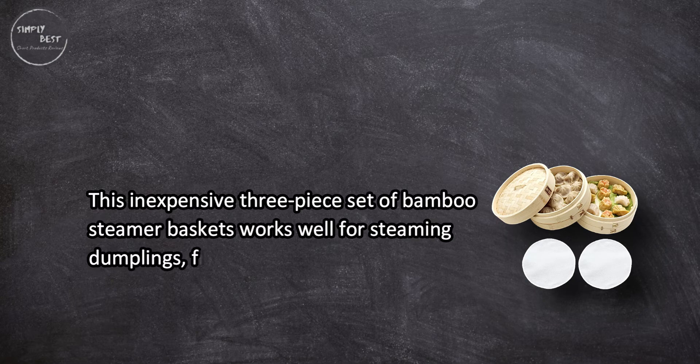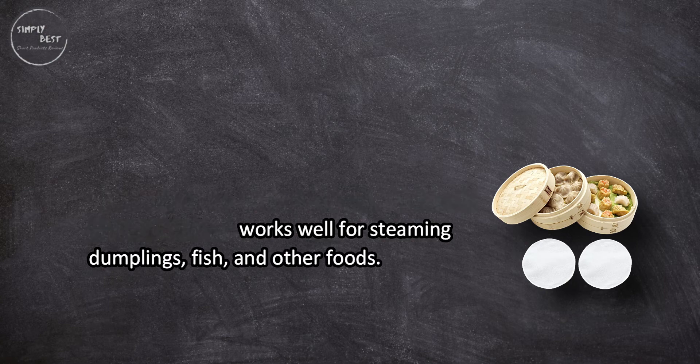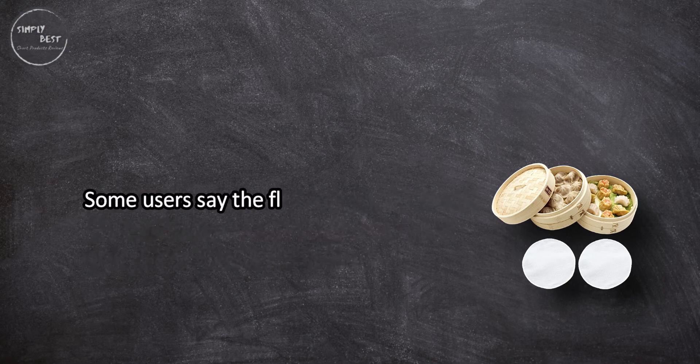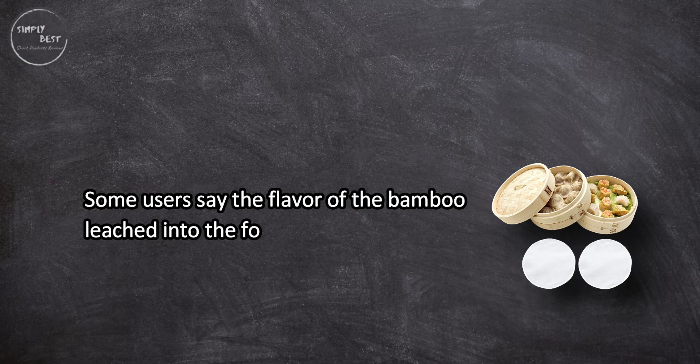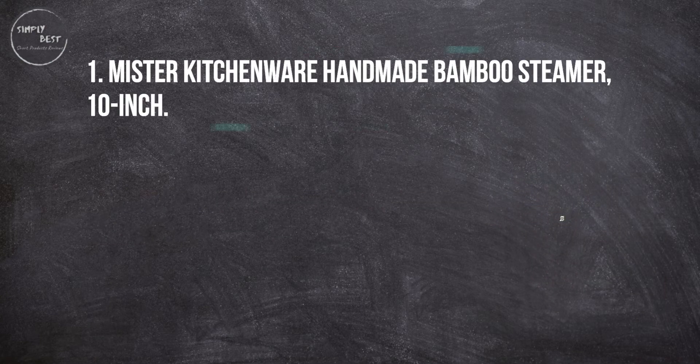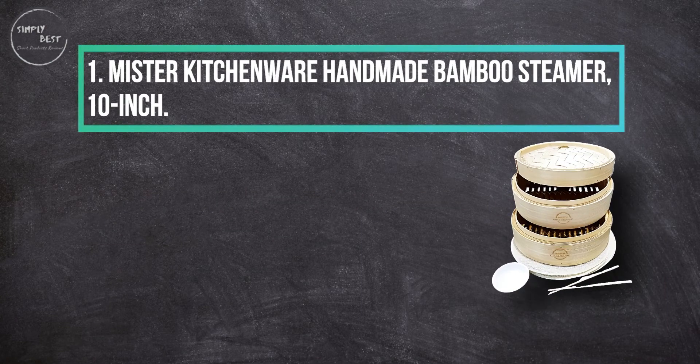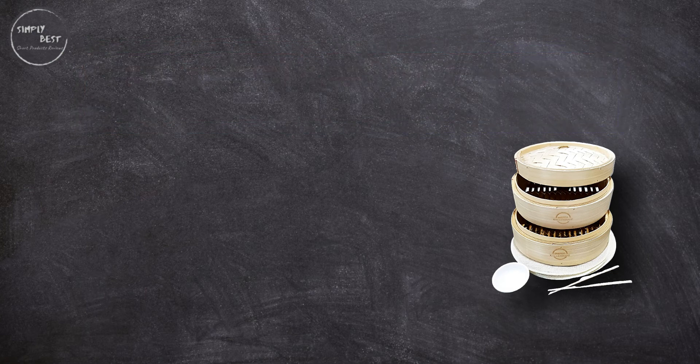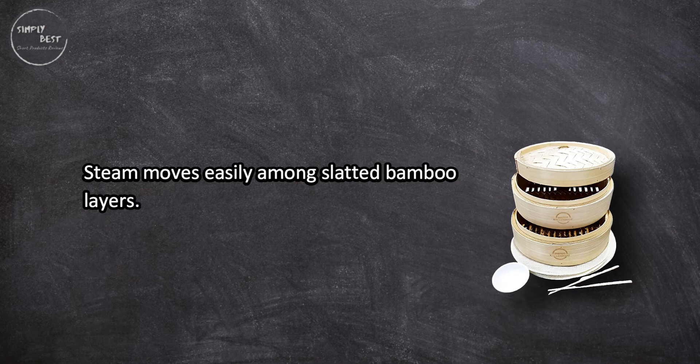Some users say the flavor of the bamboo leached into the food. At number one: Mr. Kitchenware handmade bamboo steamer, 10-inch. Steam moves easily among slatted bamboo layers. No metal parts to alter the taste of food. 100% bamboo construction.